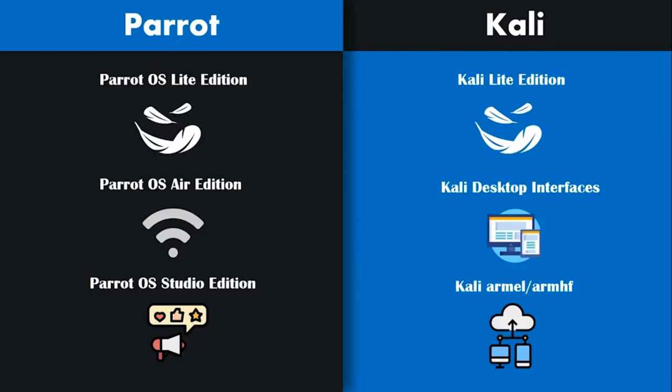This is where the differences start. Parrot OS Air edition also exists — an edition used for wireless penetration testing and wireless vulnerability testing, so basically anything wireless, Parrot OS Air edition does it faster and better. Then there's also Parrot OS Studio edition, which is used for multimedia content creation. So if you're thinking about using Parrot OS for marketing as well as security, Parrot OS is definitely your go-to operating system.